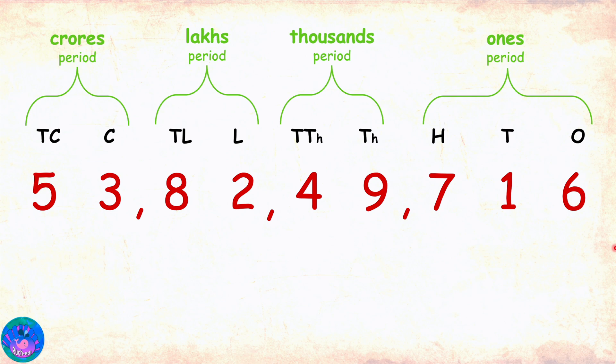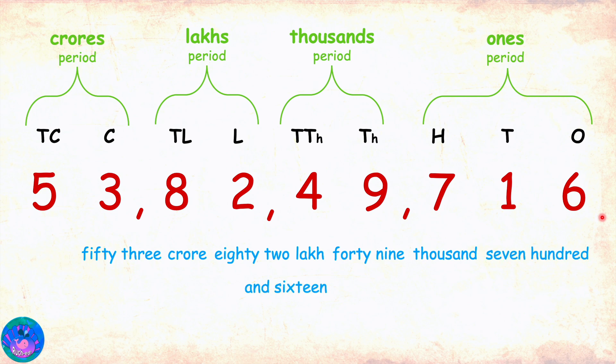And to read the number, we start reading the periods from the left. So, this number is 53 crore 82 lakh 49 thousand 716. Got it?